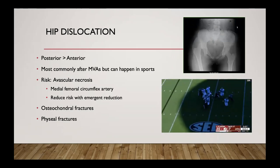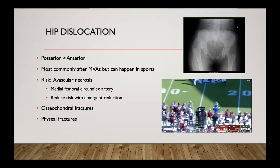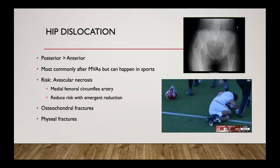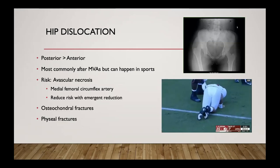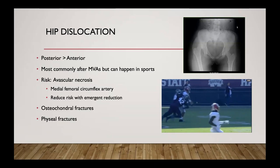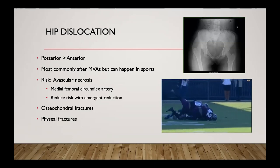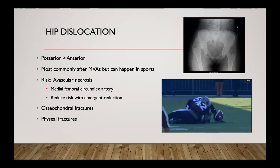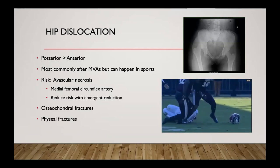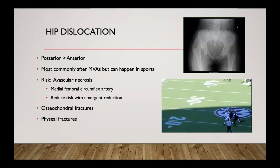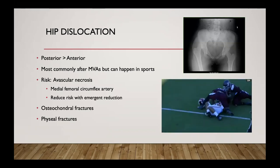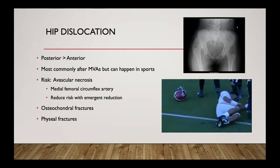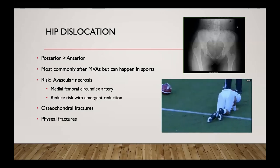Hip dislocation is most commonly caused by motor vehicle accidents but can happen in sports. The main long-term risk is avascular necrosis because of damage to the medial femoral circumflex artery, and this risk is reduced with emergent reduction. Other consequences include osteochondral fractures, loose bodies, shearing of the cartilage, and in younger individuals, a physeal fracture similar to SCFE from the trauma.